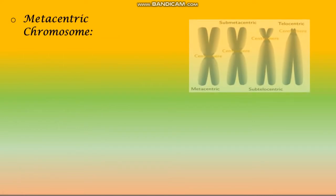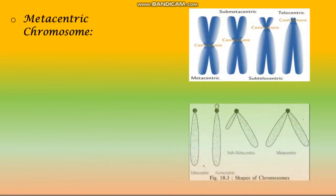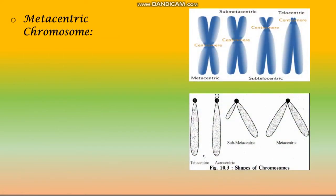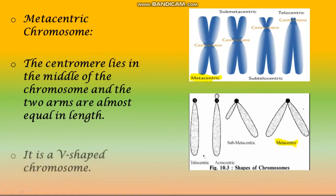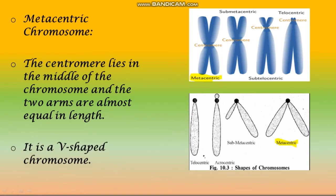Metacentric chromosome: the centromere lies in the middle of the chromosome and the two arms are almost equal in length. It is a V-shaped chromosome.